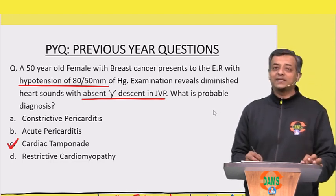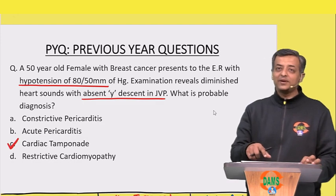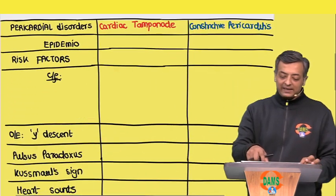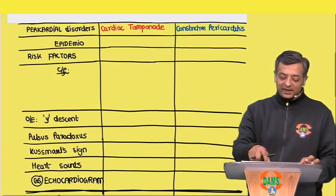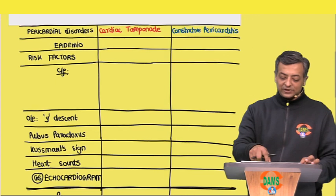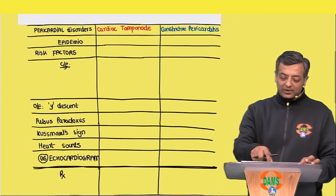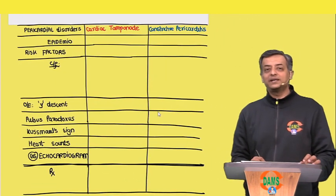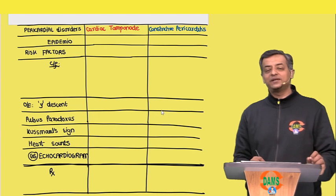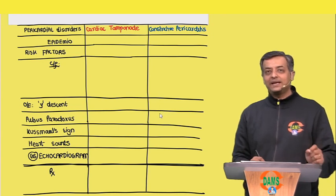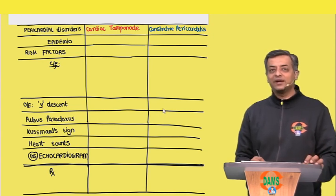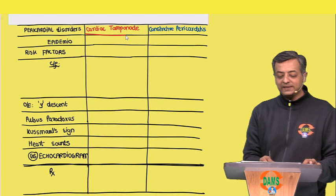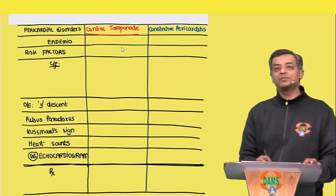What we are going to do is take every question and discuss the differentials, so that you not only know the answer to the question but also understand the differential diagnoses. For example, in this question we are going to understand why the answer is cardiac tamponade.